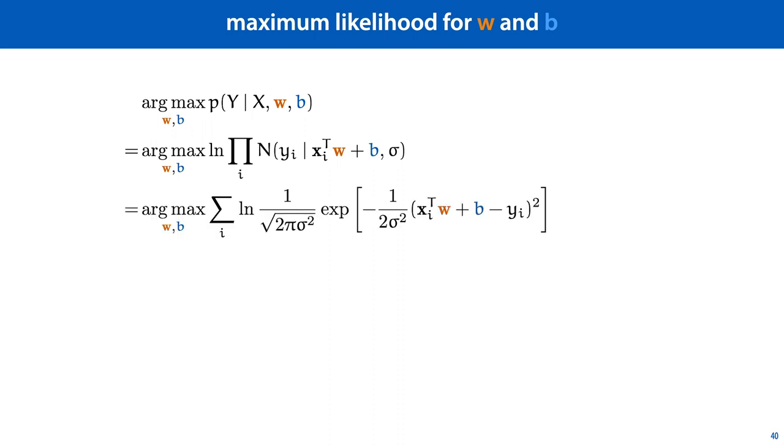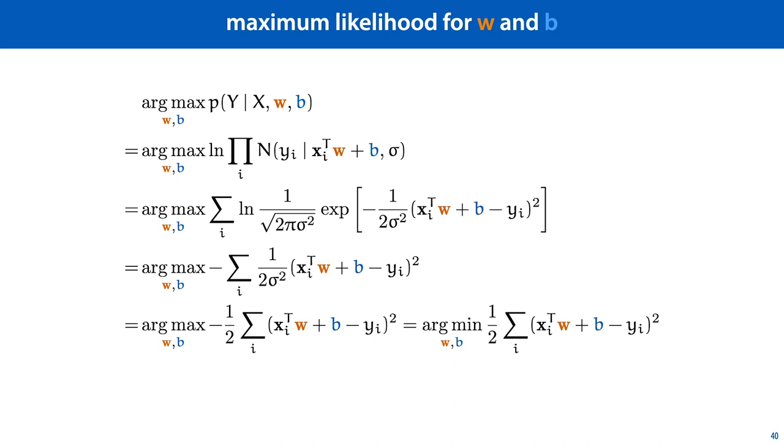We simplify as before, and since we're only interested in the mean, a lot of the elements of the probability density of the normal distribution disappear, and this is what we're left with. By removing this minus in front, we turn the maximization objective into a minimization objective, and what we are left with is simply the sum of squared errors objective that we've been using already.